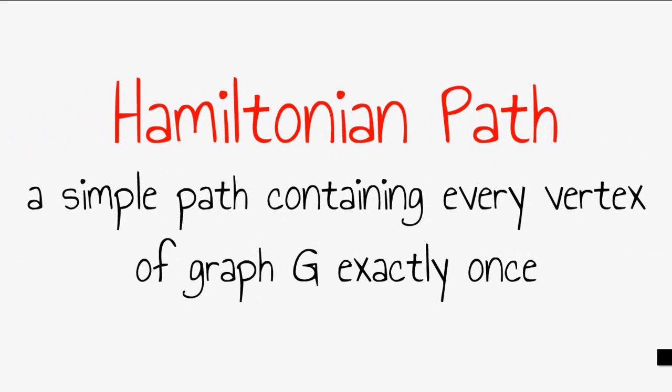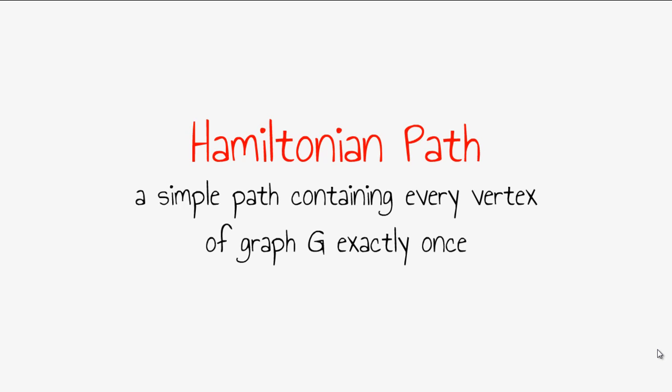A Hamiltonian path is a simple path containing every vertex of graph G exactly once, very similar to the Hamiltonian circuit. Here's an example.